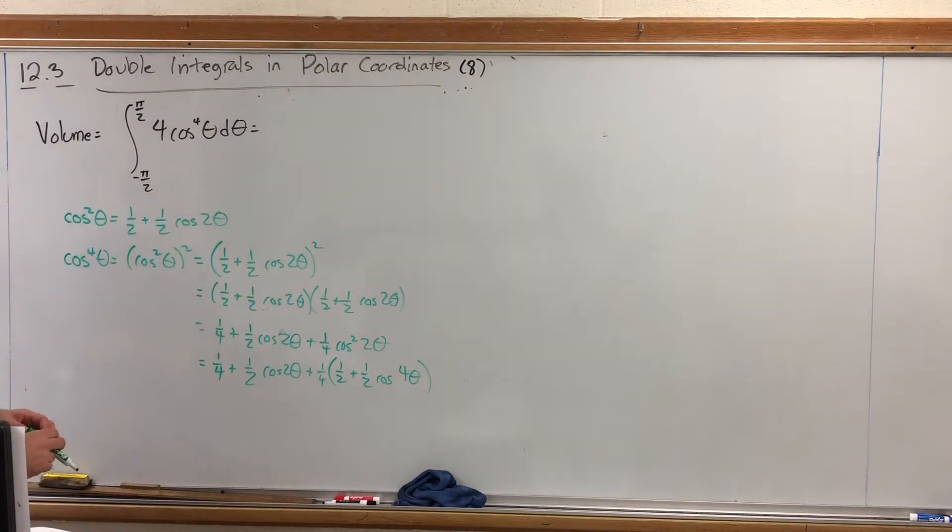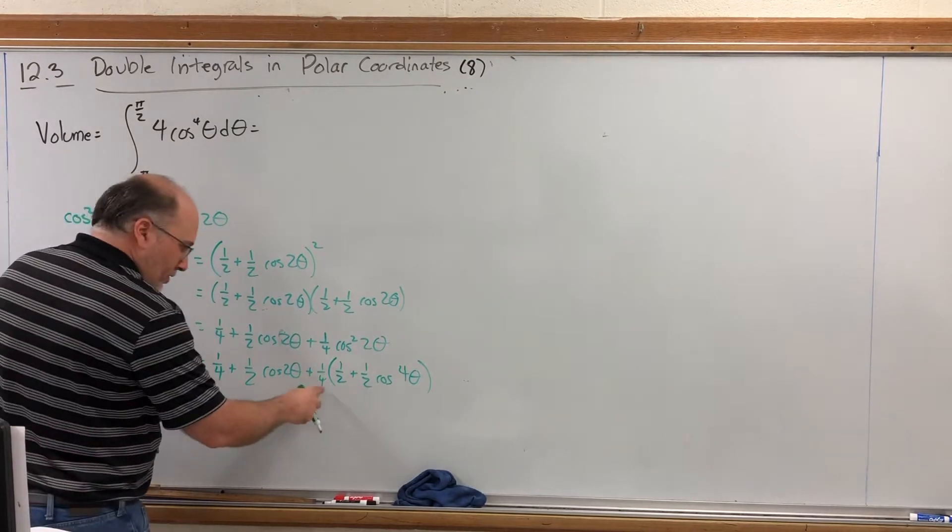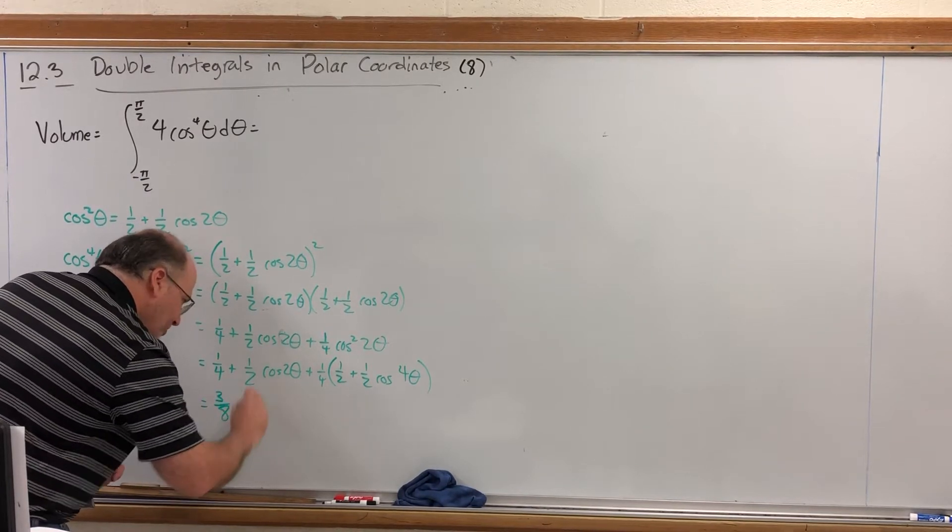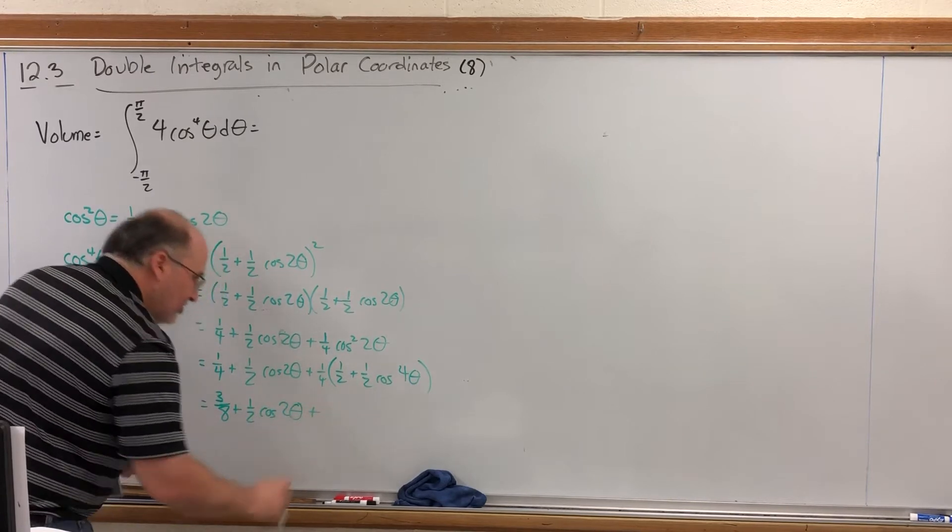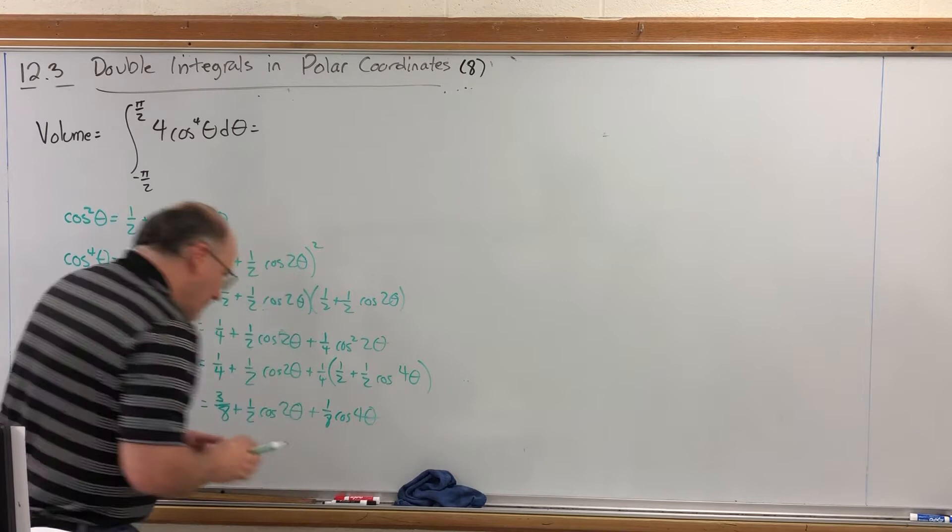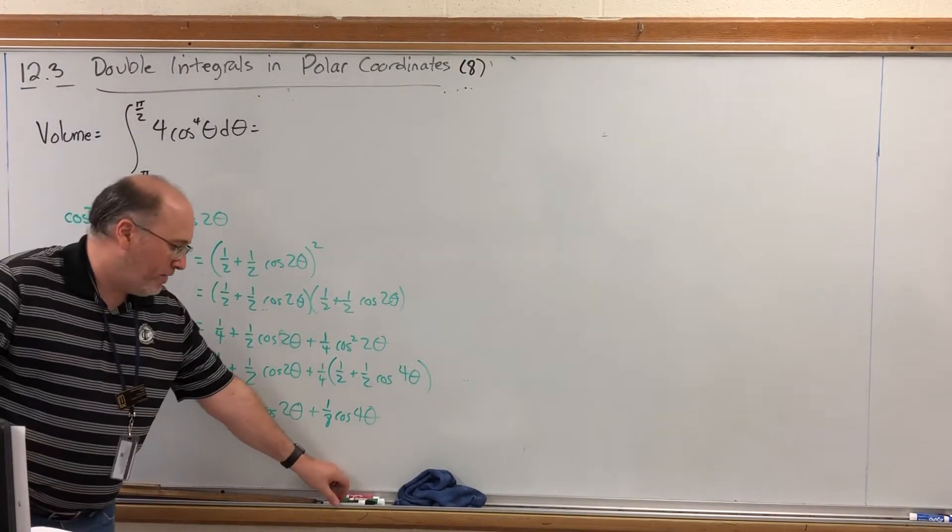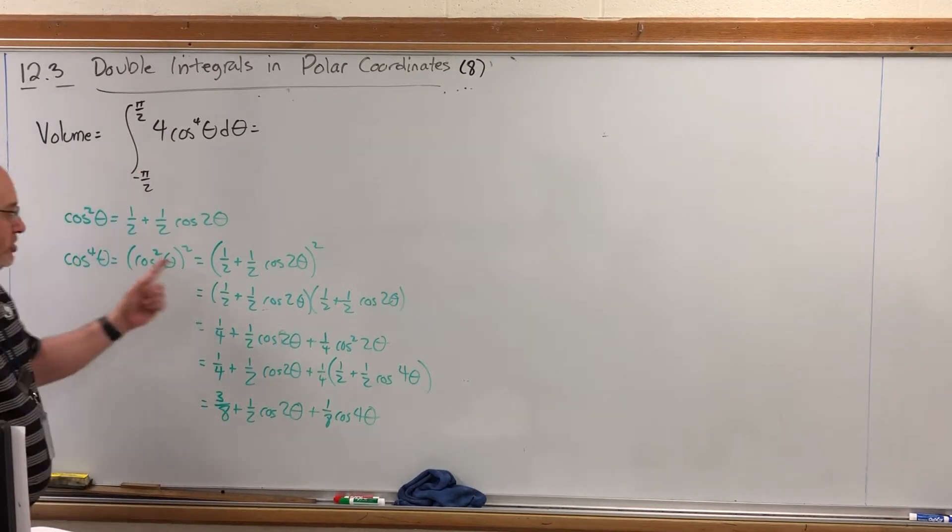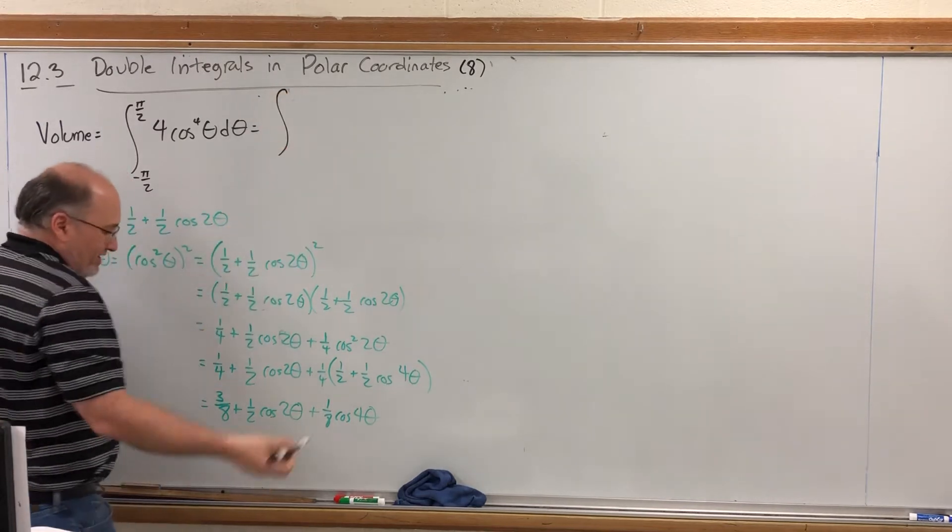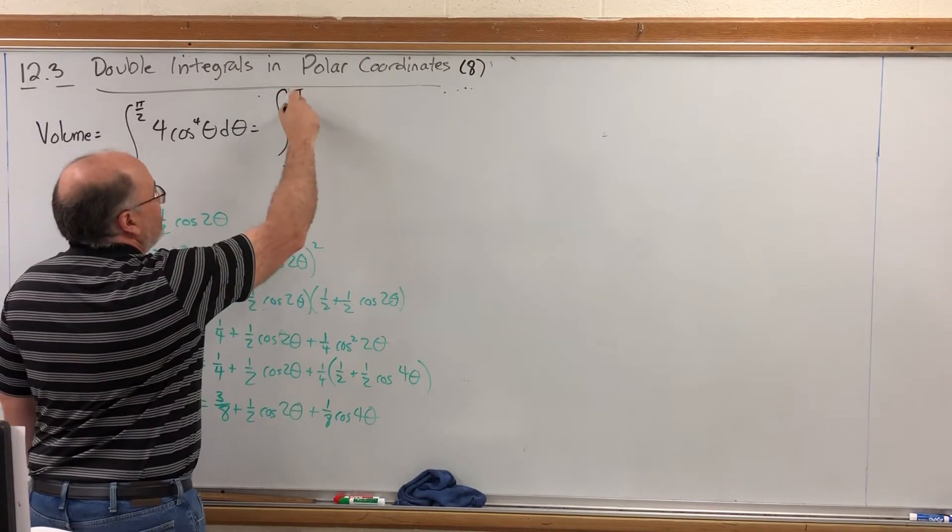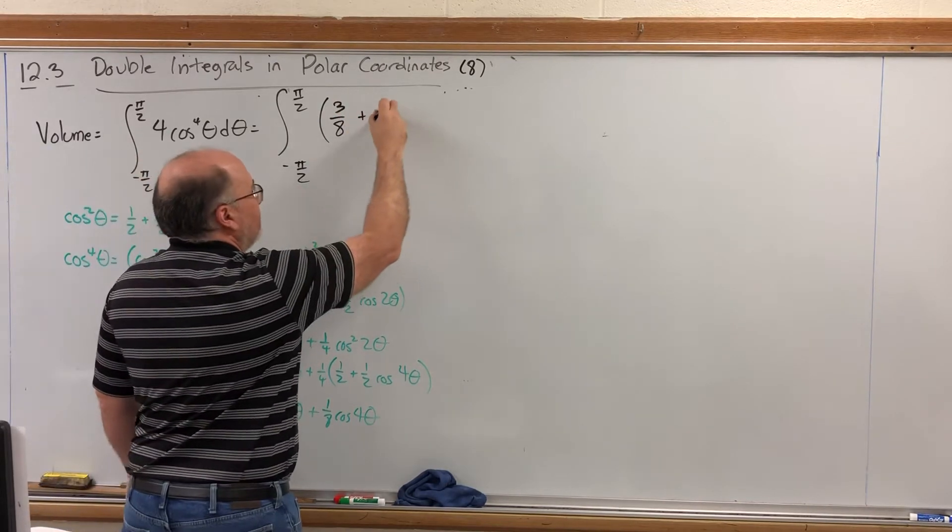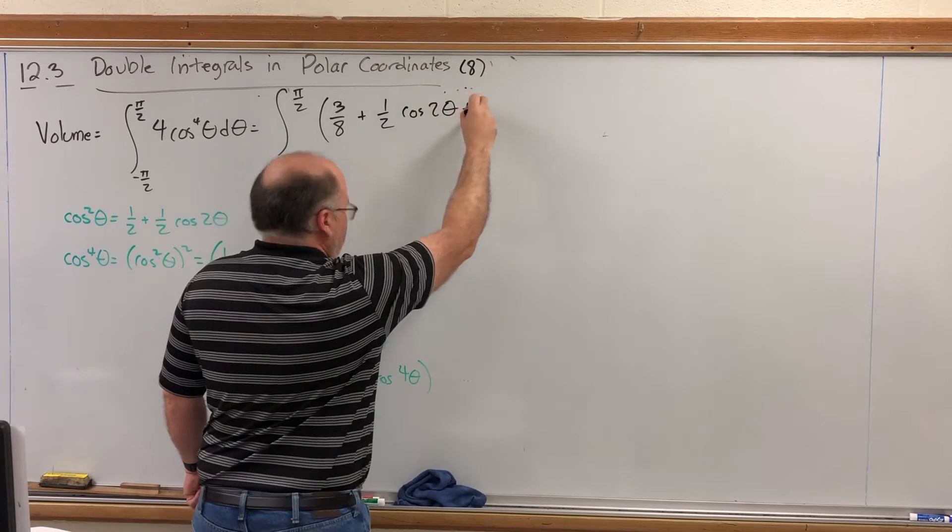Now we can distribute and combine some like terms. One-fourth times one-half is one-eighth. One-eighth plus one-fourth is three-eighths plus we still have the one-half cosine two theta plus distribute the one-fourth we will get one-eighth cosine four theta. Yeah, integrating cosine to the fourth requires a lot of trigonometric smoke and mirrors to cut the power down from four to two and then cut that power down from two to one. I tell my students before and during calculus that when you're in calculus the hardest part is not the calculus, the hardest part is the algebra and the trigonometry as is evident in this problem.